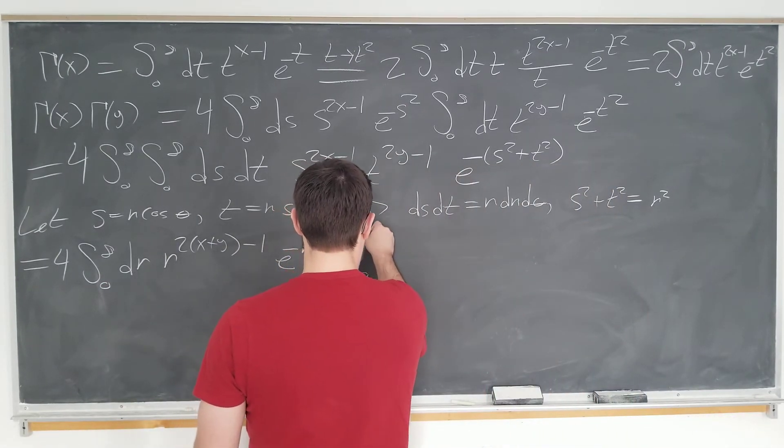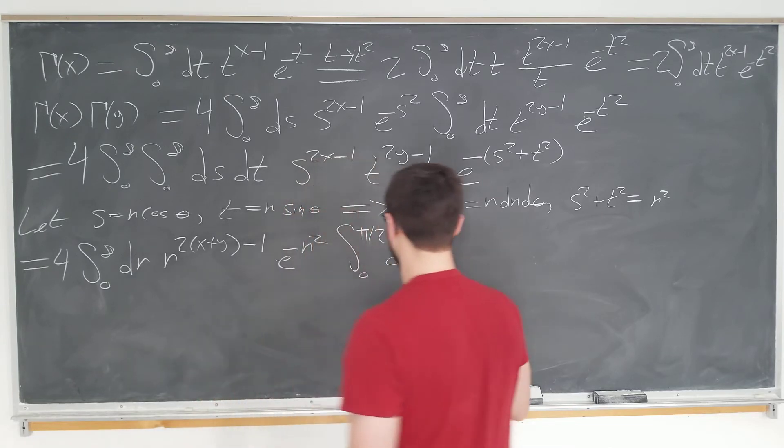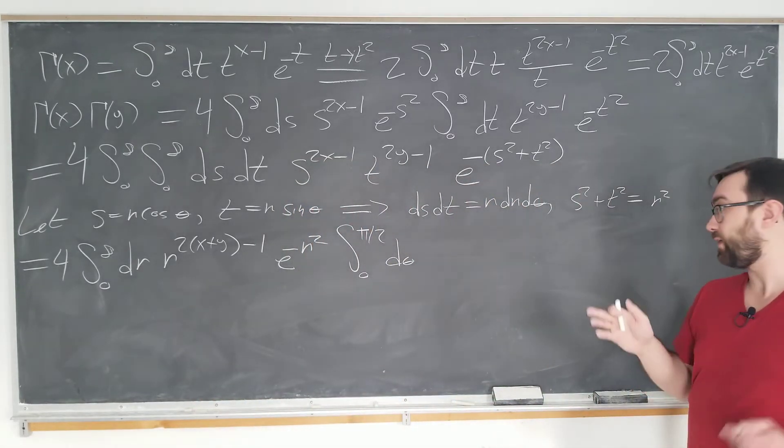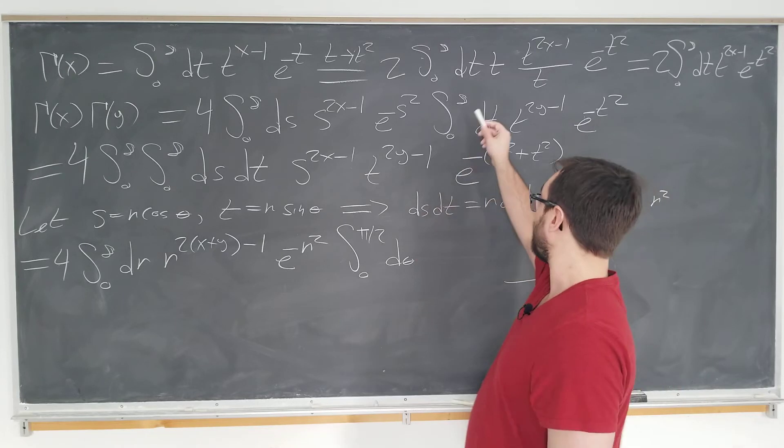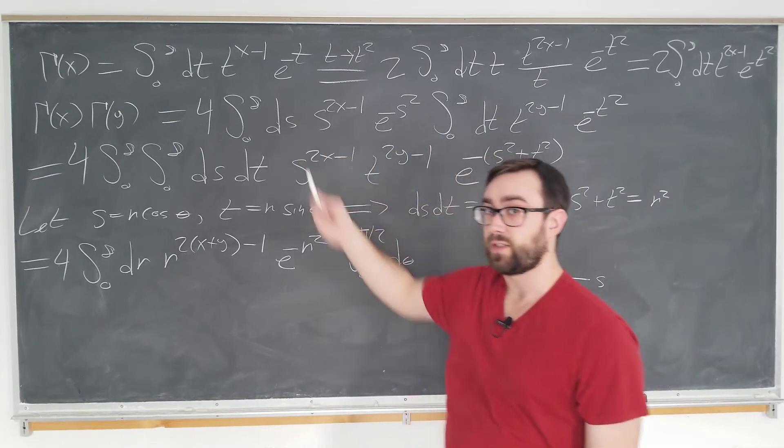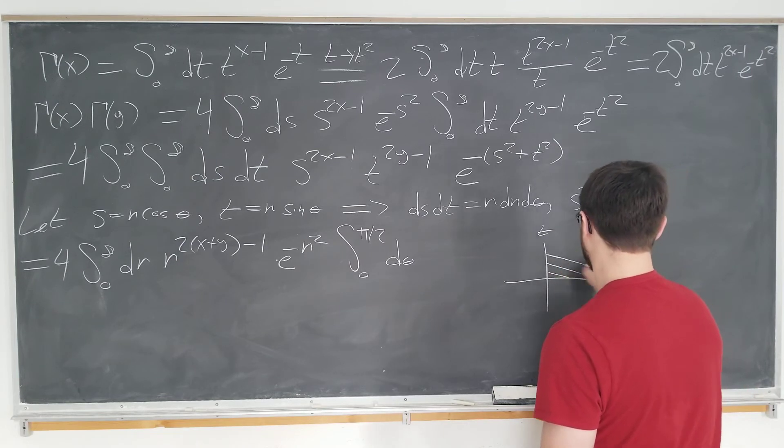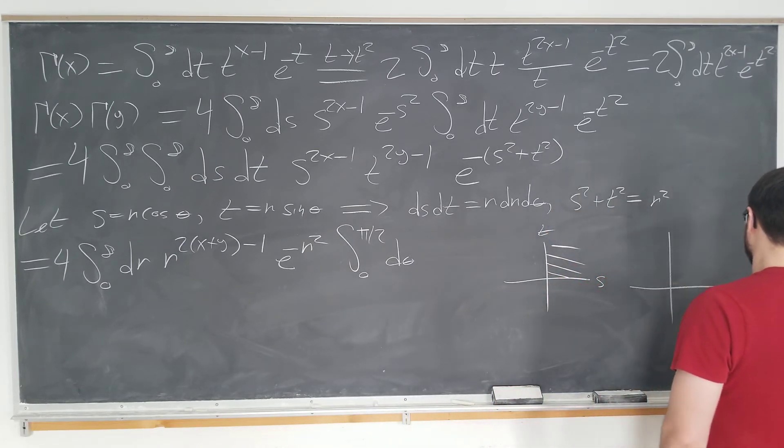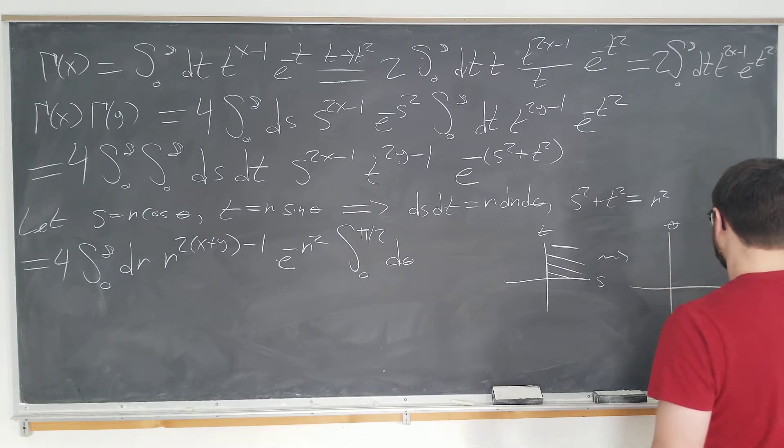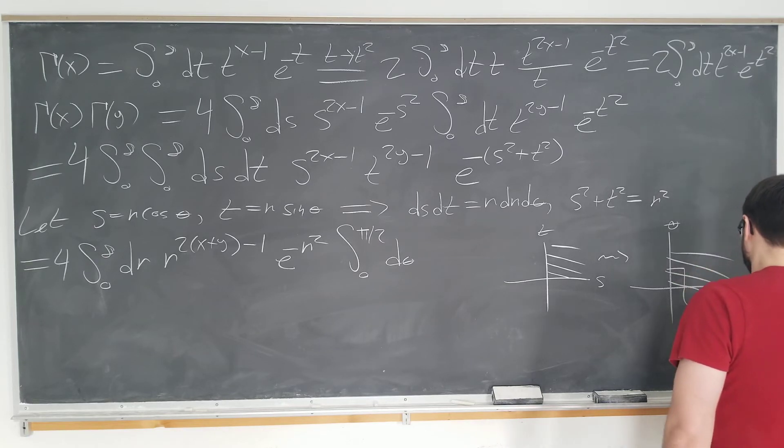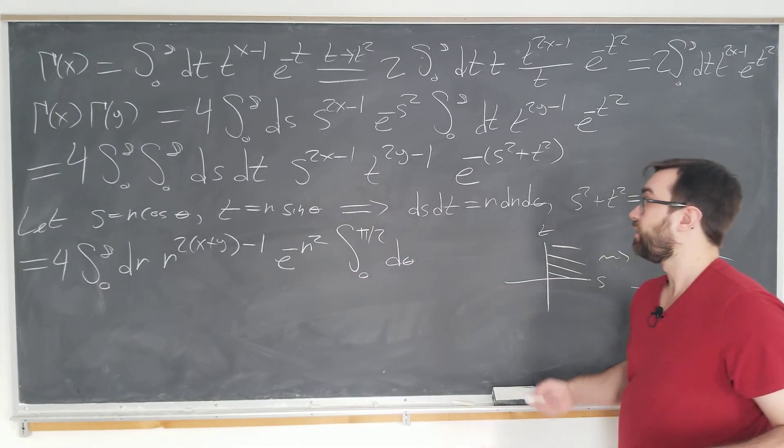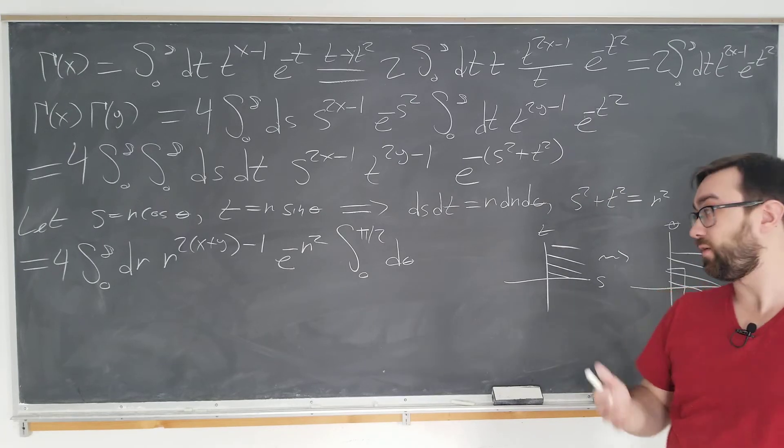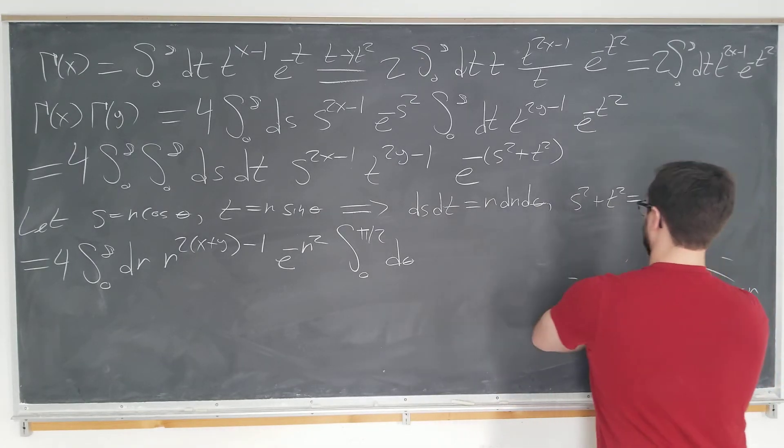So, theta actually goes from zero to pi over two. Why does it go from zero to pi over two? Well, let's just look at the regions. We originally had a region with s and t where they both go from zero to infinity, as you see here. This corresponds to only the first quadrant. And if we write that in the r and theta plane, then the first quadrant actually corresponds to an angle of pi over two, or a 90 degree angle. So, that's why we don't go all the way around. We want to go from zero to infinity of both variables. Okay, sounds good.